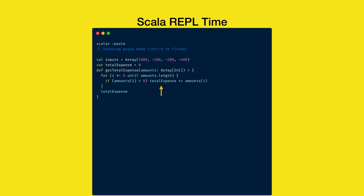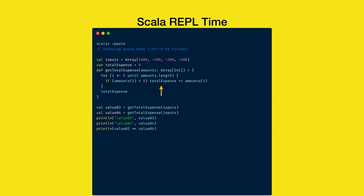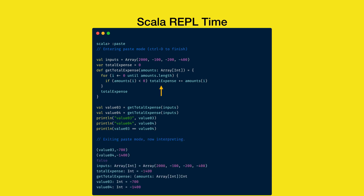But this time, it updates a global variable called TotalExpense, which is not part of the inputs to the function — in other words, it is in the global state, and the function getTotalExpense causes observable side effects. We call the function twice and store the results in value03 and value04 variables, and print them on console. When we exit the paste mode, the Scala compiler executes the code, and as you see, value03 and value04 are not the same value.